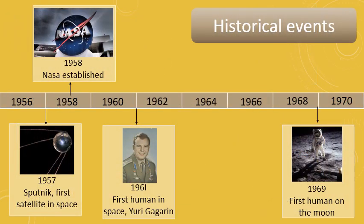Timelines can also show historical events. This timeline shows the key events in the space race between the Soviet Union and the USA. Each bar in the timeline is the same size and represents the same amount of time, showing two year intervals.